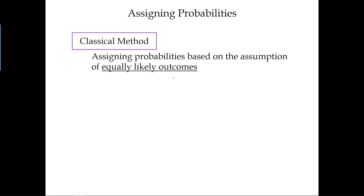The first method is called the classical method. You assign probability based on the assumption of equally likely outcomes. Before going further into the classical method, I want to ask you: if you toss a coin once, what's the chance of getting heads and what's the chance of getting tails?